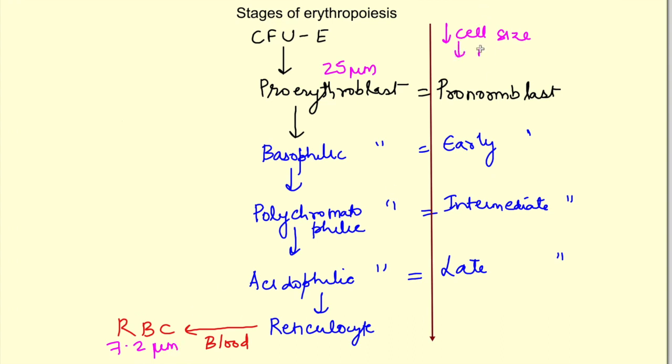Size of the nucleus also decreases and ultimately it disappears. We will see in which stage. There is increase in the cytoplasm. Nuclear cytoplasmic ratio, that is how much nucleus is there and how much cytoplasm, decreases because nucleus content is decreasing.